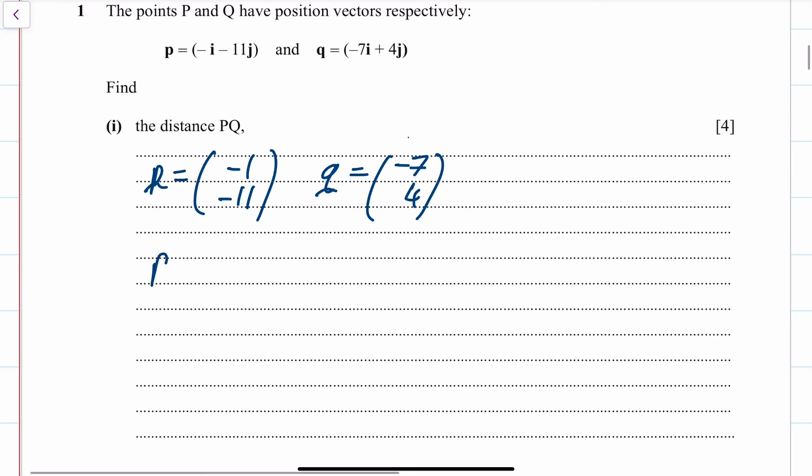Find the distance PQ. We need to find the vector PQ first of all. The vector PQ is the position vector of Q minus the position vector of P.